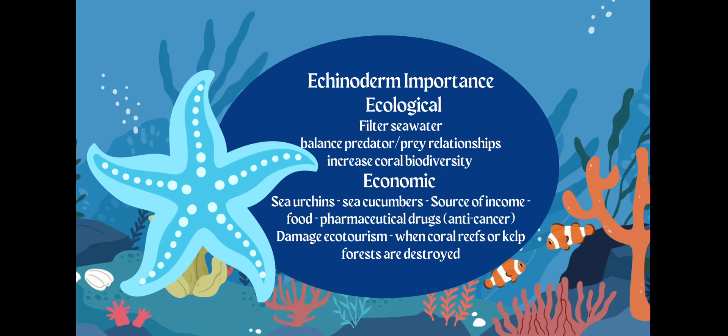Now economically — that means money — what do we do with echinoderms? Well, we could have sea urchins and sea cucumbers, which are actually used as sources of food. We could also use them for pharmaceutical drugs, and they're going to be used for the aquarium trade. You may know of somebody who has a saltwater tank with sea stars in it. It could also help with ecotourism — people are more likely to go to areas that have an abundance of organisms. Since sea stars are balancing that predator-prey relationship and increasing coral biodiversity, people are going to pay more money to go and check them out.